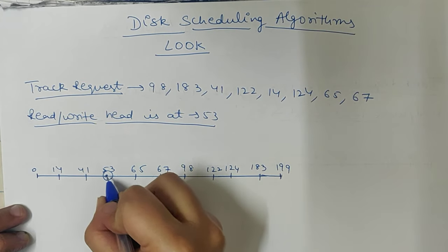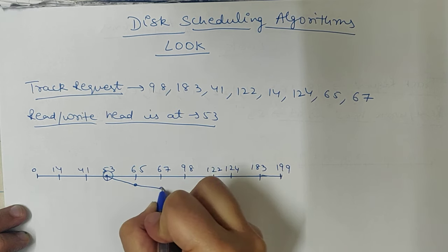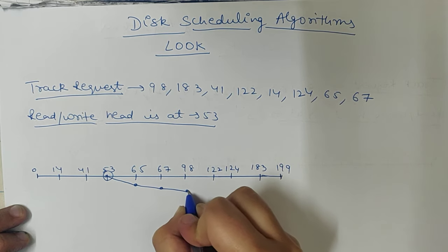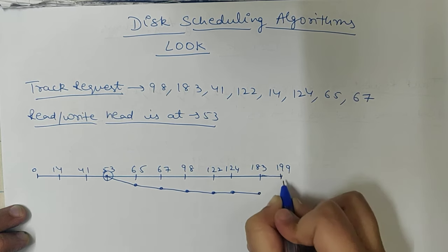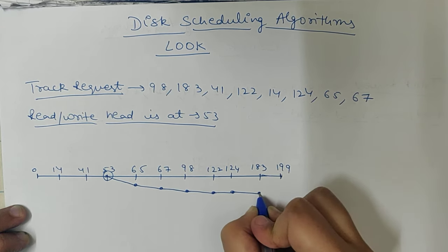So let's start with 53 from 65, then 67, then 98 requests, then 122 requests, then 124, then 183. Now we are not going to last, only 183.